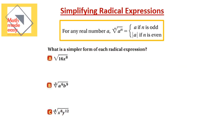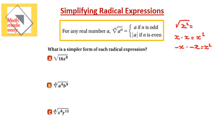Now we move into variables. For any real number a — the radicand — the nth root of a to the power of n equals a if n is odd, and the absolute value of a if n is even. For example, the square root of x squared: x times x equals x squared, and negative x times negative x also equals x squared, so there are two solutions. For variables we write absolute value of x, meaning one positive and one negative solution. This applies when the index n is even.